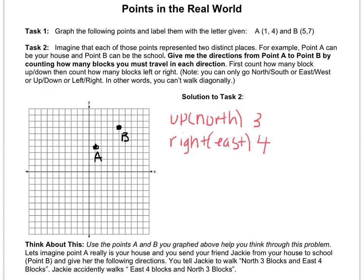I've plotted the points, and I said that in order to get from point A to point B, you have to go up 3, I also called it north, like they did in the question, and then to the right or east 4.